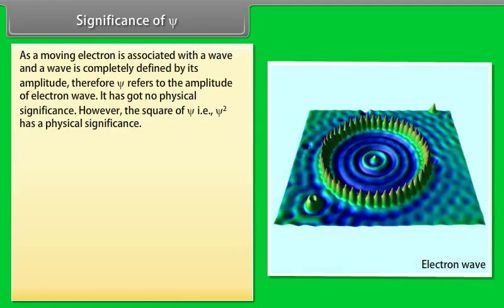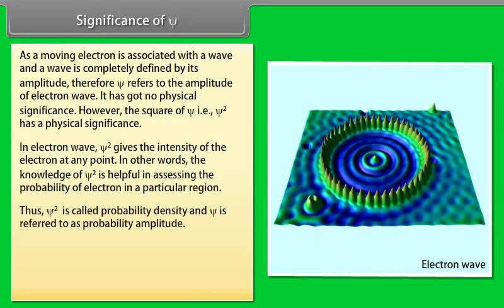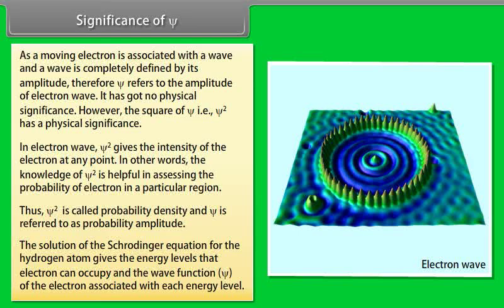Significance of Xi: As a moving electron is associated with a wave, and a wave is completely defined by its amplitude, Xi refers to the amplitude of the electron wave and has no direct physical significance. However, Xi squared has physical significance — in the electron wave, Xi squared gives the intensity of the electron at any point, and knowledge of Xi squared helps in assessing the probability of finding an electron in a particular region. Thus, Xi squared is called probability density and Xi is referred to as probability amplitude. The solution of the Schrödinger Equation for the hydrogen atom gives the energy levels the electron can occupy and the wave function associated with each energy level.